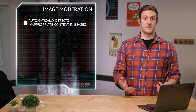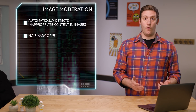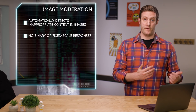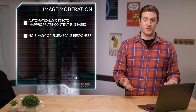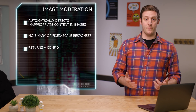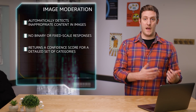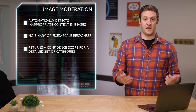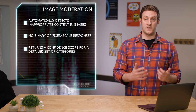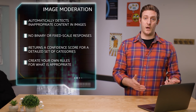Rather than provide a binary flag or fixed scale responses that can result in too broad of a filter to be really useful, the image moderation API returns a confidence score for a detailed set of suggestive and explicit content categories. This fine-grained response lets you create your own rules around what is appropriate for the culture and demographics of your users.